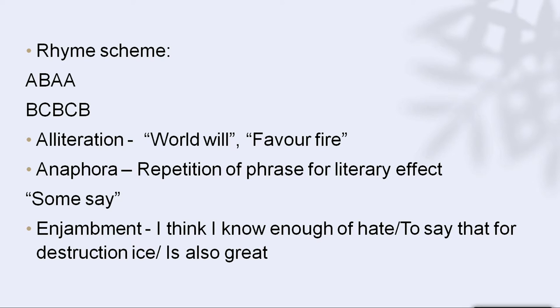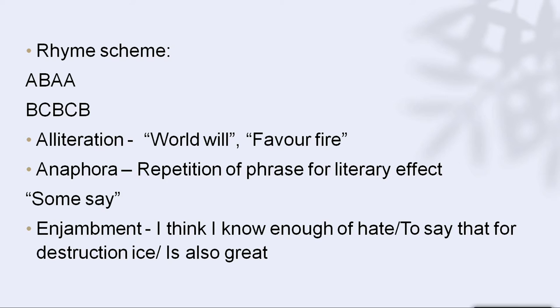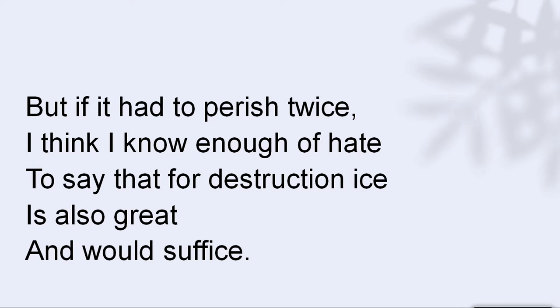There's another figure of speech called enjambment. Generally in poetry, lines are self-contained — what one line says, the next says something else or continues the thought. But when the same line runs into the next line to complete its meaning, that is enjambment. If you read Emily Dickinson's poetry — the famous 19th-century American poet — she used enjambment to great effect. Here, 'I think I know enough of hate to say that for destruction, ice is also great' runs across two lines to lay emphasis on the greatness of ice.